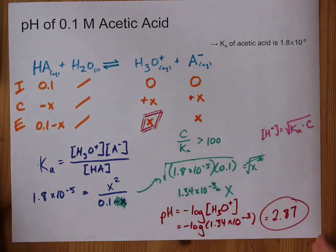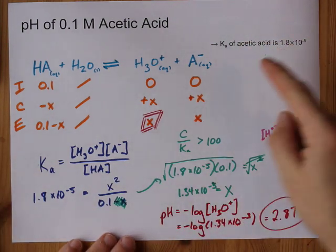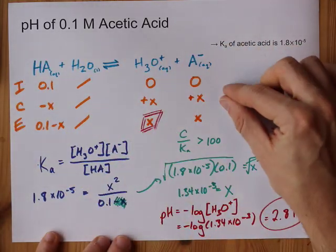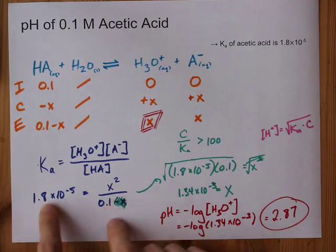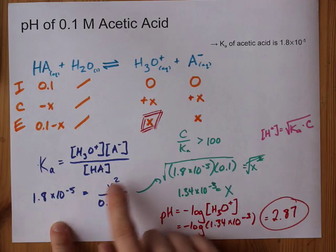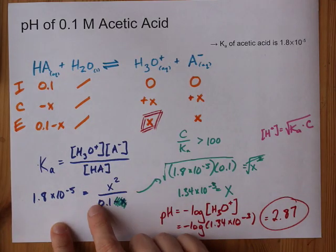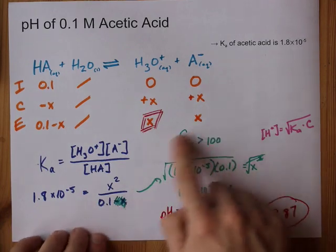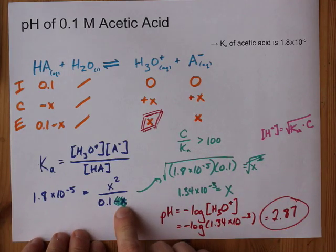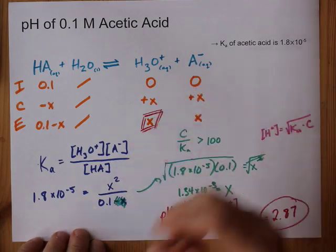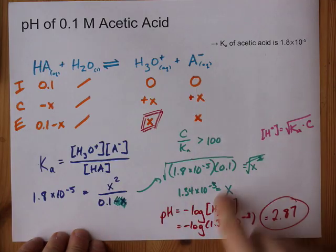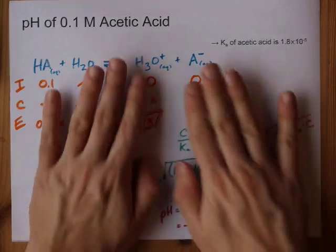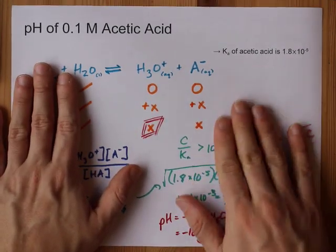The point behind calculating the pH of acetic acid, or any weak acid, is that you're given the Ka. You can either do the full ICE table, or jump straight to the general setup: Ka equals x squared over (C minus x). You'll usually be able to use the assumption that lets you chop off the x. If you can't, you're stuck using the quadratic formula. Solve for x, and the negative log of that x gives you the pH. Best of luck!